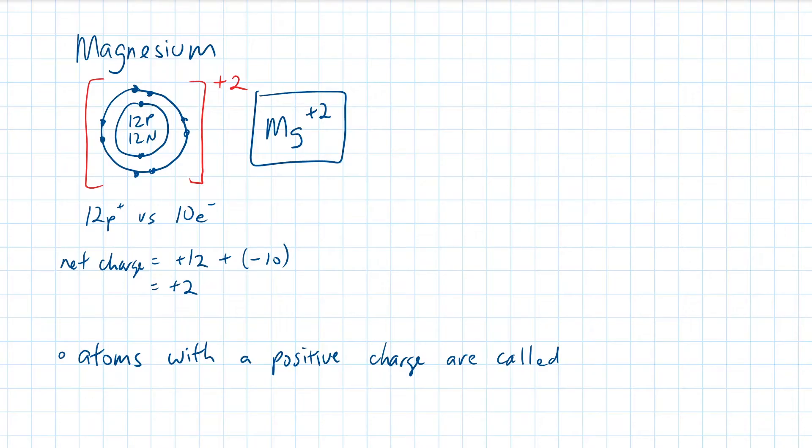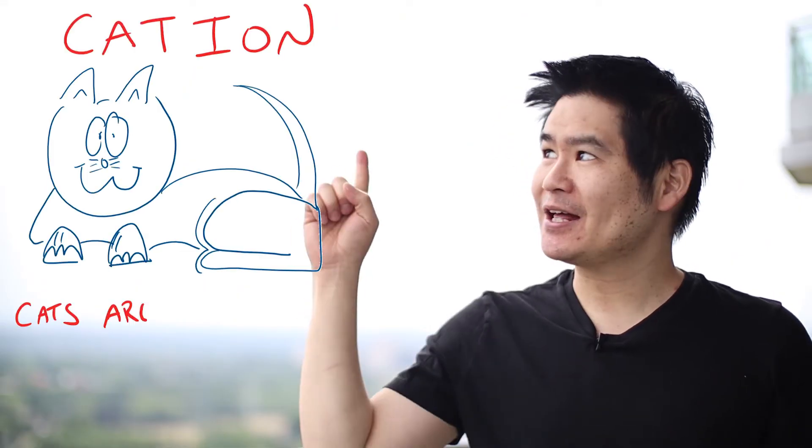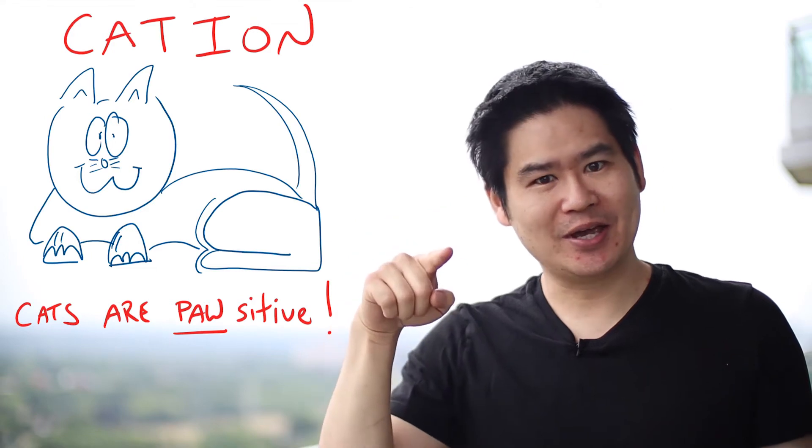Positive ions are known as cations. You want a cheesy memory aid? Cats are positive. It's okay to laugh.